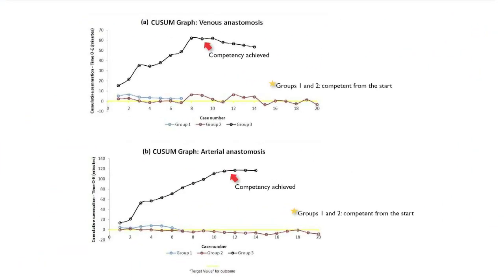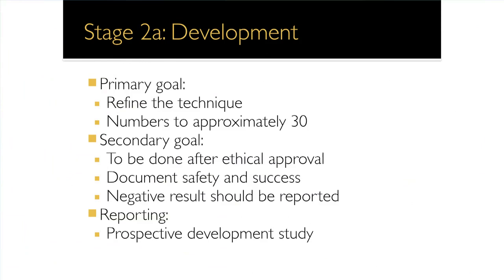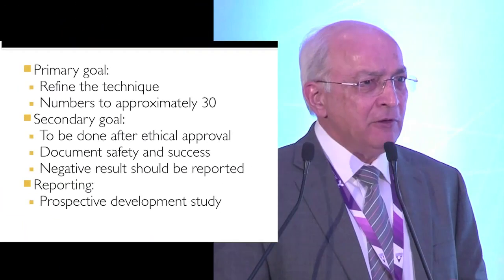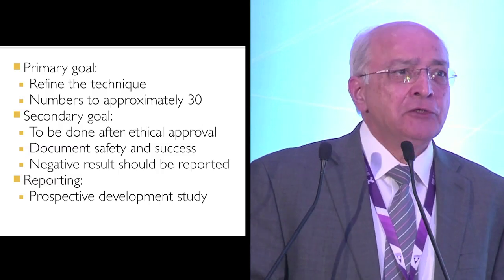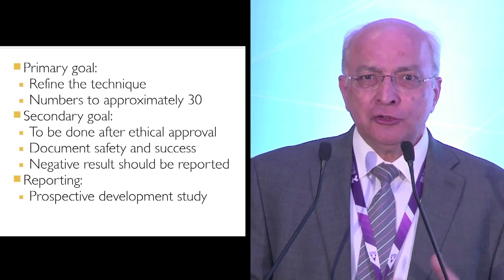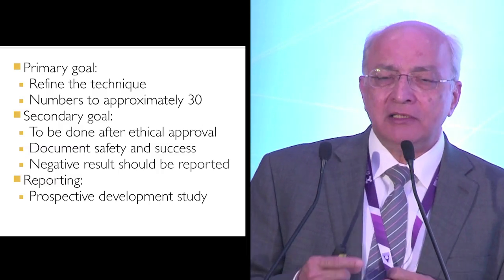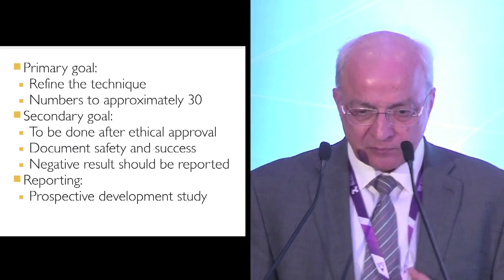Looking at this graph — the top represents competency. A group that was naive to robotic procedure achieved competency in venous anastomosis in about 10 cases and arterial anastomosis in about 12 cases. Similarly assessed for ureteric anastomosis and other steps, approximately 15 to 20 cases were sufficient for a naive surgeon to achieve competency. This was an important message for spreading the procedure — new surgeons would know how many cases they needed.